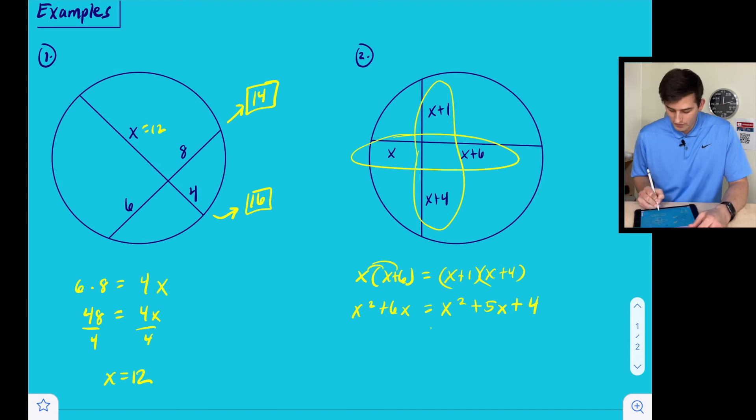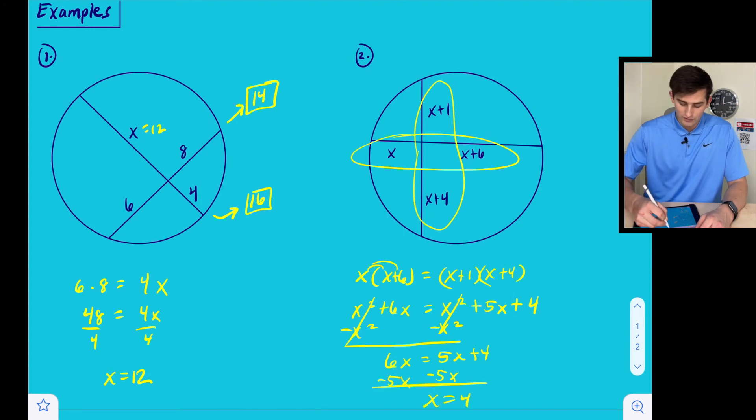And now we just want to solve here. We do have an X squared on both sides, so we can subtract X squared, and that's going to cancel those out. So now we have six X equals five X plus four, so we can subtract five X from both sides, and we're left with X is equal to four.